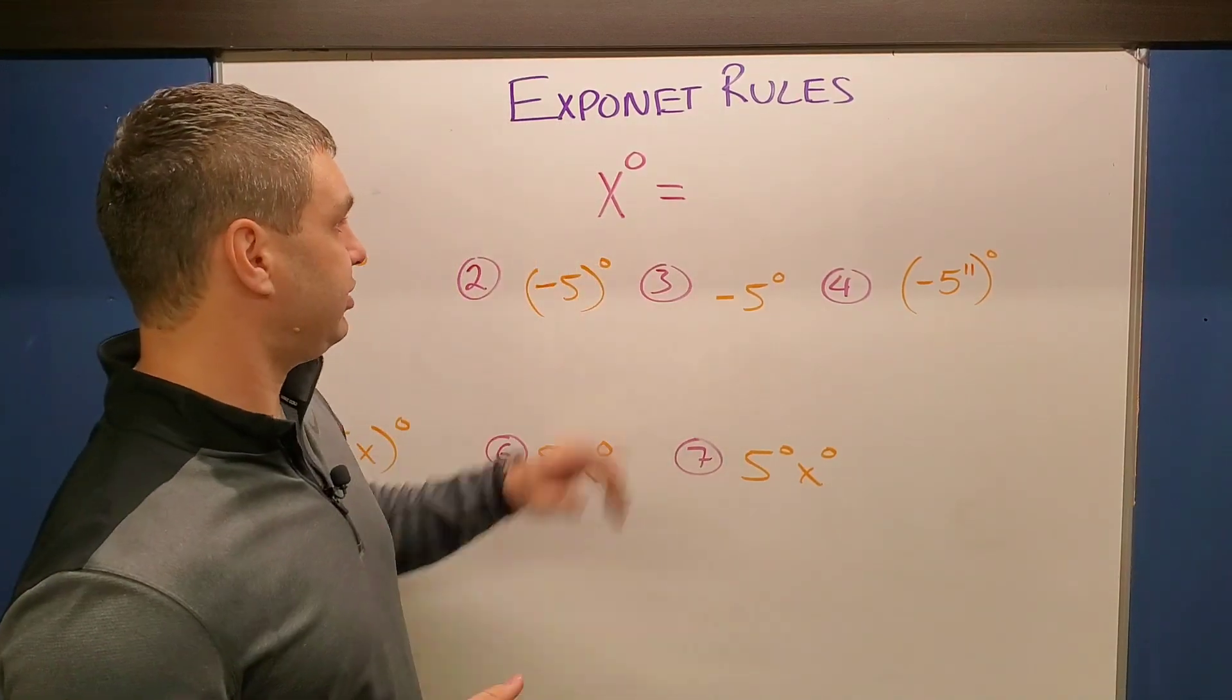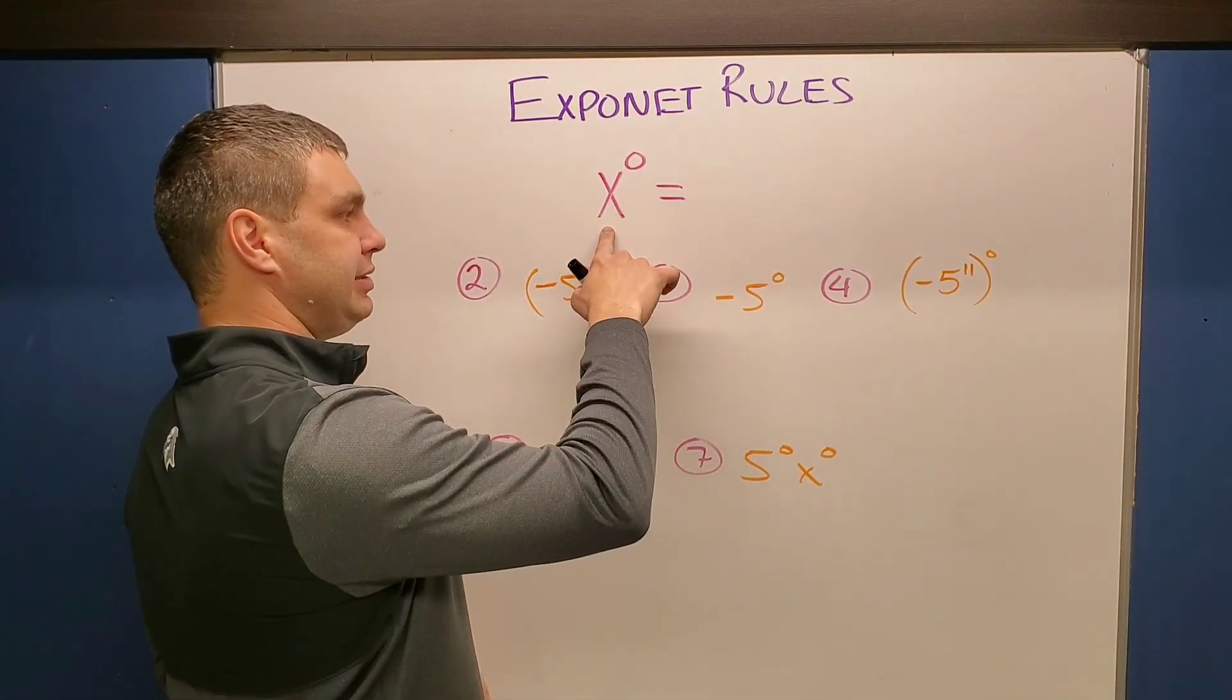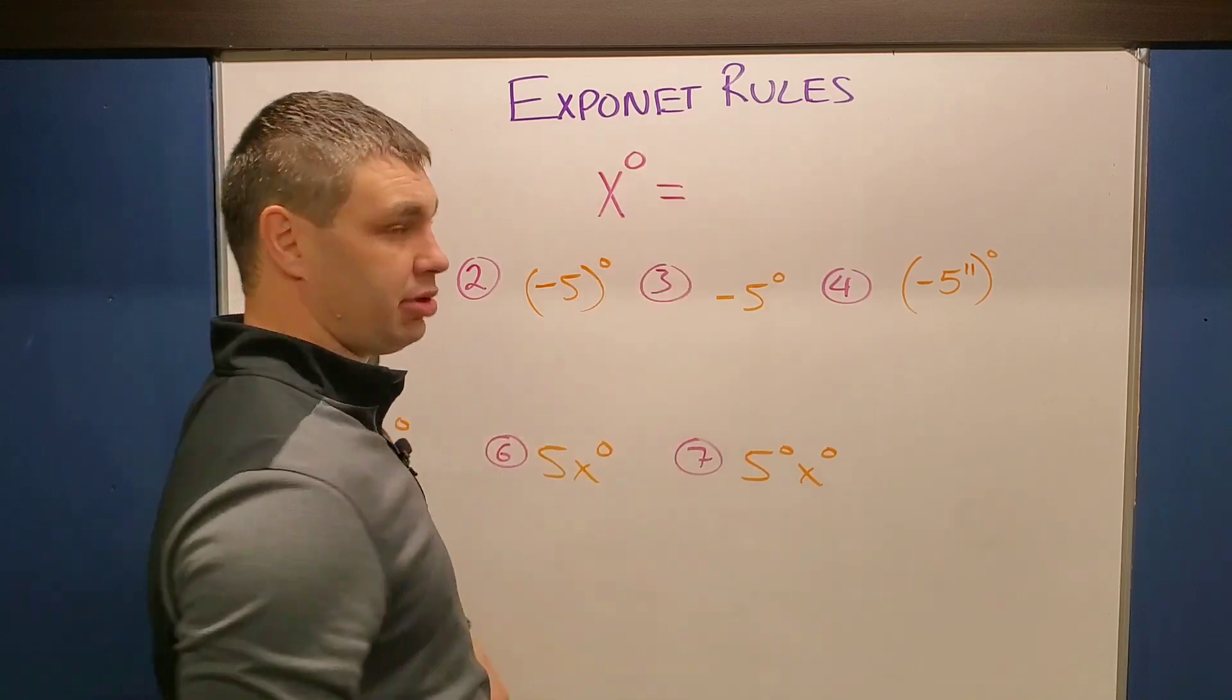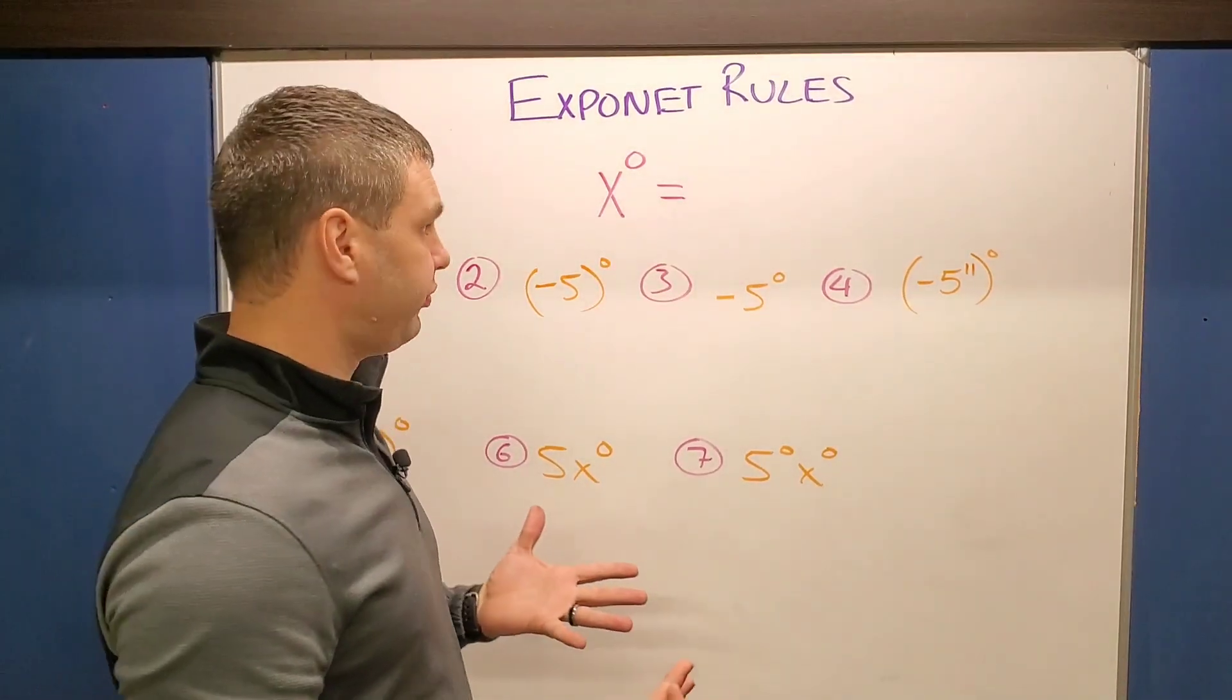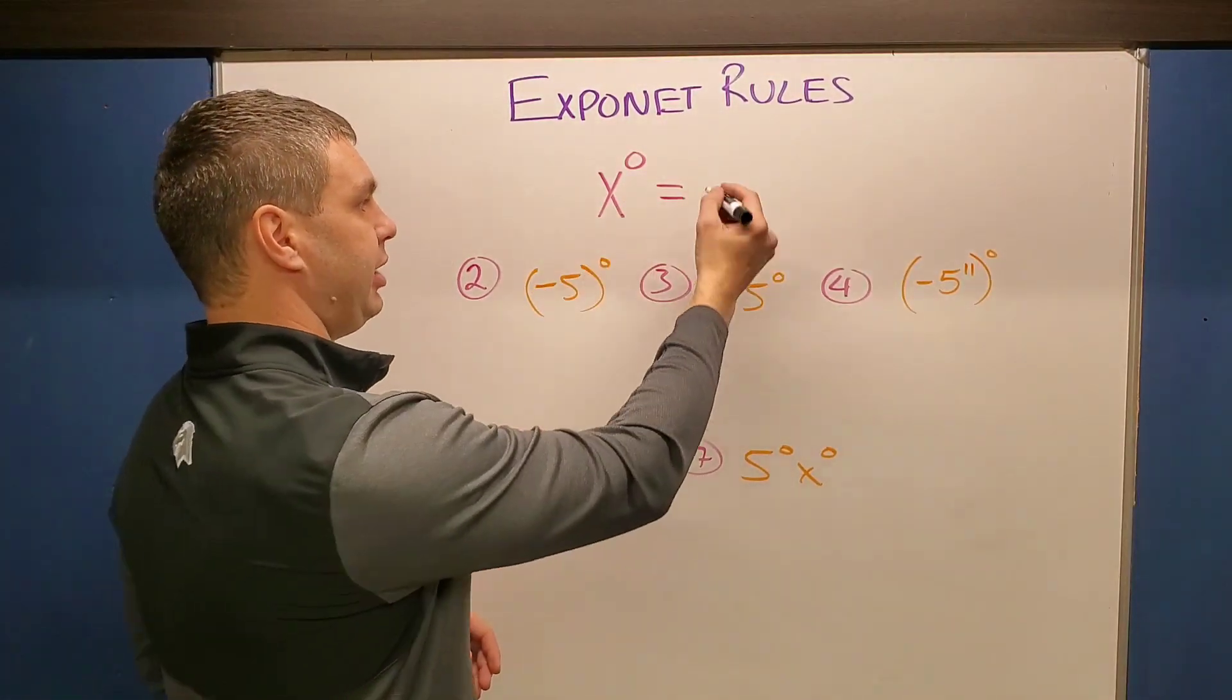Got some more exponent rules for you today. In this one, we're going to talk about what happens when you raise a base to the zero power. And the rule for this is that anything raised to zero power is one.